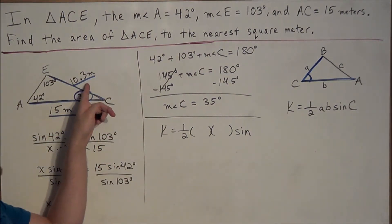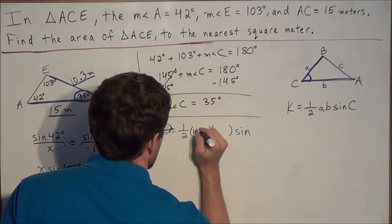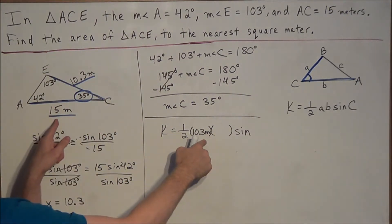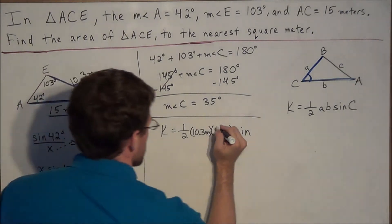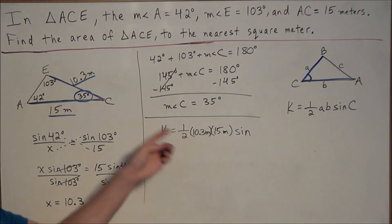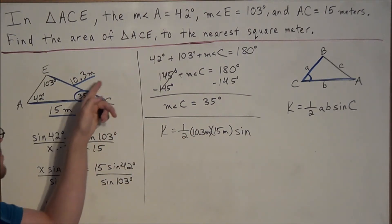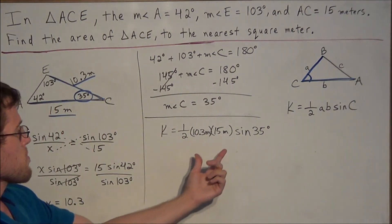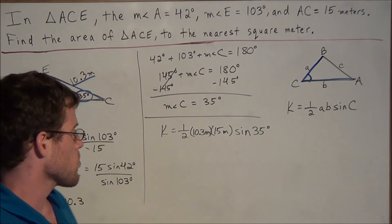So for A, we could set A equal to 10.3. And we'll throw our meters in now. B we'll set equal to 15 meters. And remember, angle C is the angle between the two sides we're using. So this is 35 degrees.